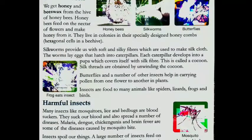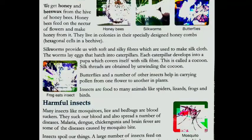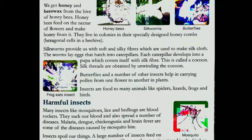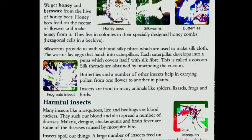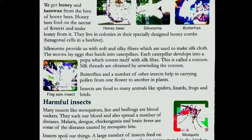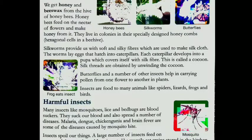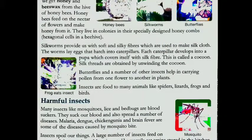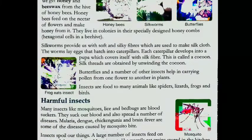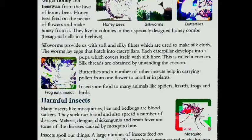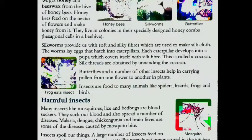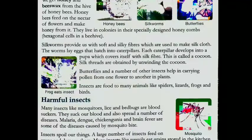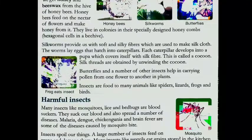Honey bee ki ek colony hoti hai, yaani ki colony ki baat kare toh woh specially designed hoti hai, jaisi aunts ki bhi ek colony hoti hai. Honey bees ki bhi colonies hoti hai — jo unka madhumakhi ka jo chhatta hota hai, uski design bahut hi unique tariqe se kara hua hai. Honey combs, yaani ki aapko hexagon shape — hexagon cells, yaani hexagon shape ke unke cells design kare hote hai, yaani ki bahut hi sundar tariqe se unke cells design kiye hote hai.